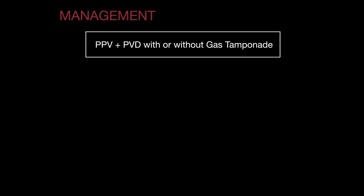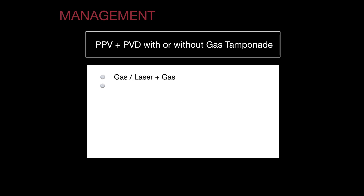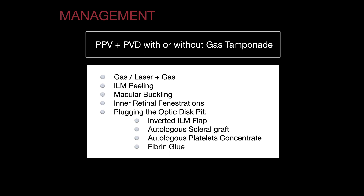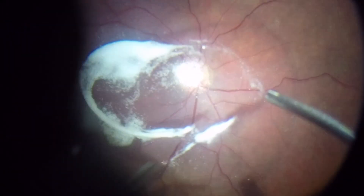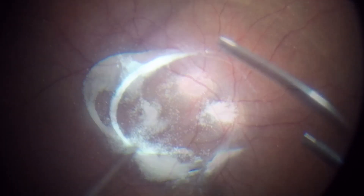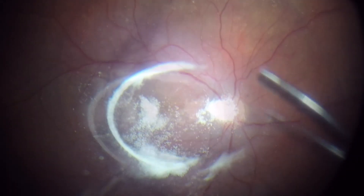The pathogenesis of optic disc pit is not fully understood and there is no consensus regarding its treatment. However, studies have shown promising long-term results in both retinal reattachment and visual improvement with pars plana vitrectomy. The key step of the vitrectomy is to remove the dense fibrous tissue around the optic disc, and the role of gas tamponade, endolaser, ILM peeling, and other adjuncts is still unknown.